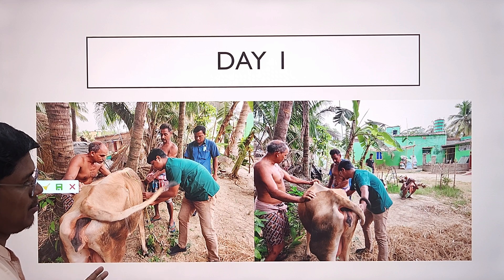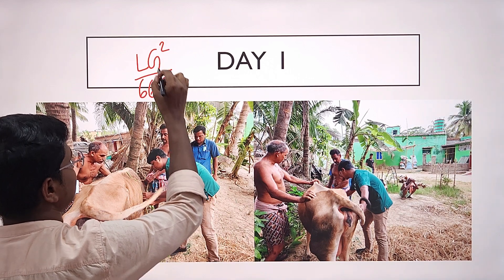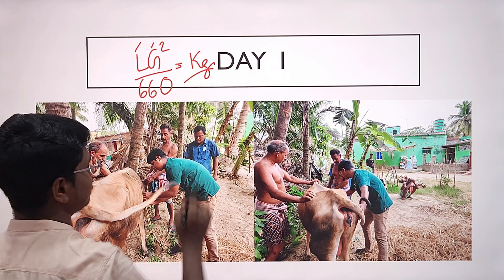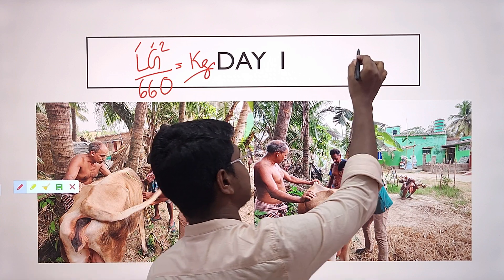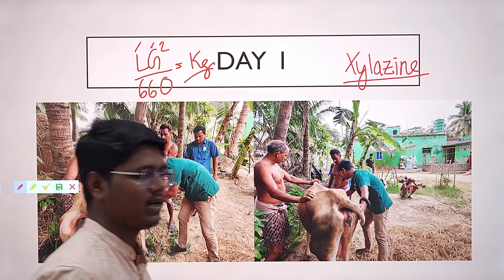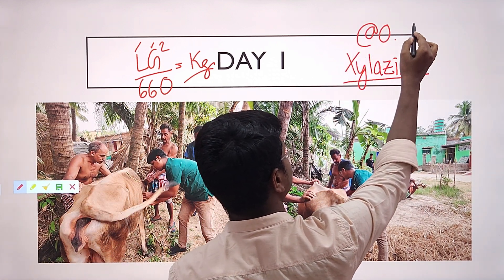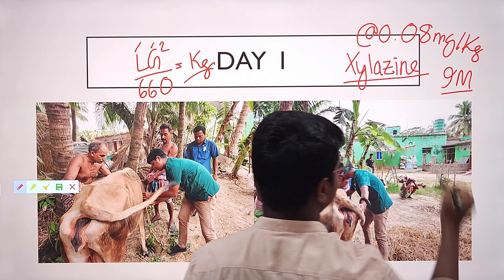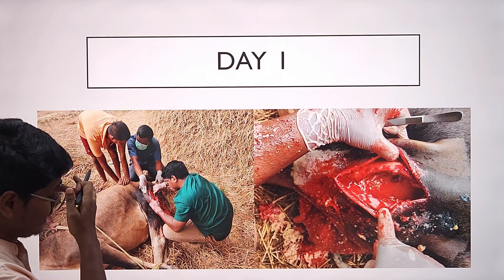On day one I did the surgery. Before that I measured body weight using the formula: length × girth squared divided by 660, where length and girth are measured in inches to give weight in kilograms. It is essential to measure body weight before giving sedatives. I used xylazine as the sedative, and I told the owner to keep the animal fasting for 24 hours. I gave xylazine at a dose rate of 0.08 mg per kg body weight intramuscularly.